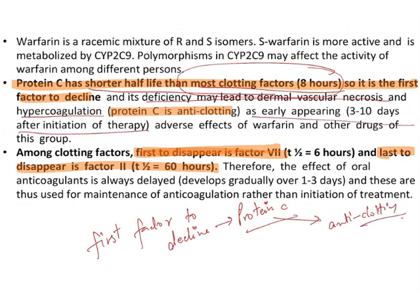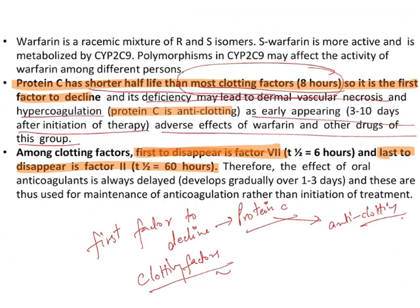Protein C deficiency appears only about three days after initiation of therapy. Among clotting factors specifically, Factor 7 is the first to disappear, as it has a half-life of 6 hours. The last clotting factor to disappear is Factor 2.